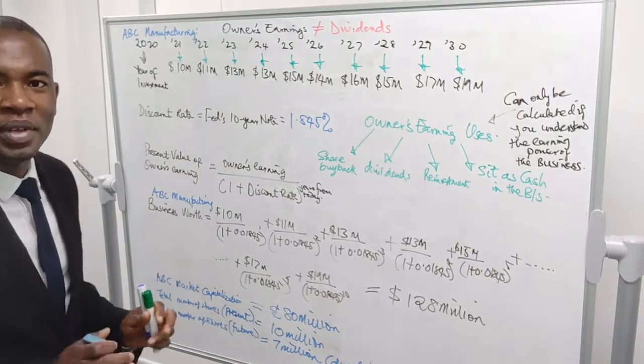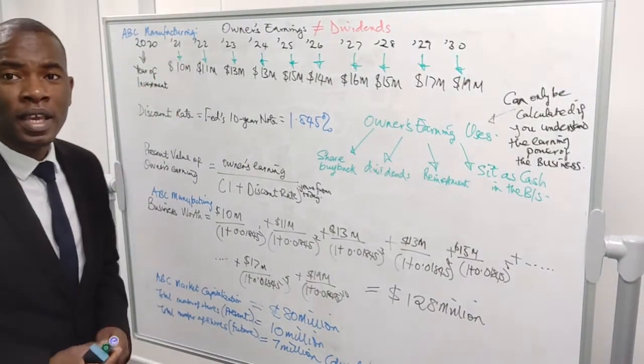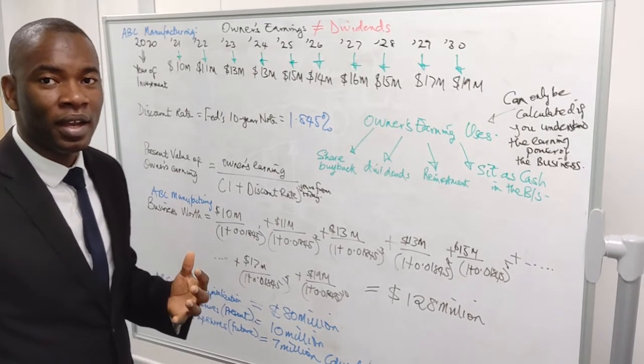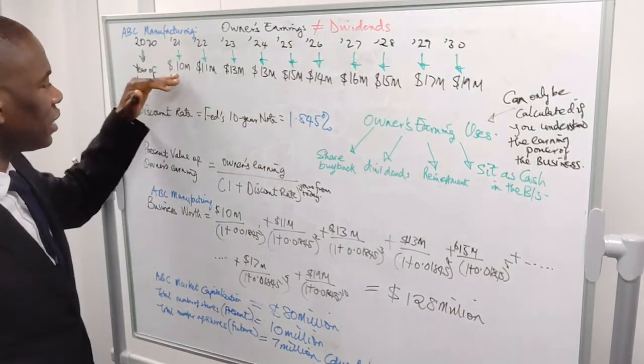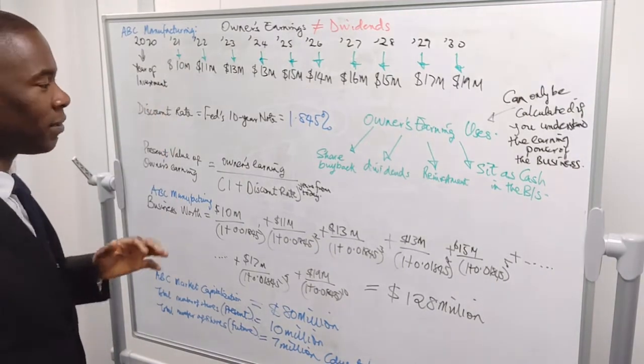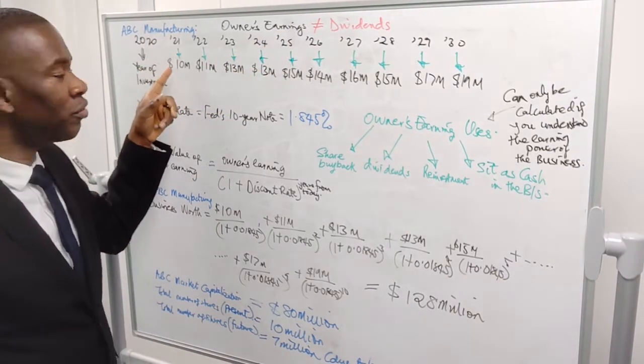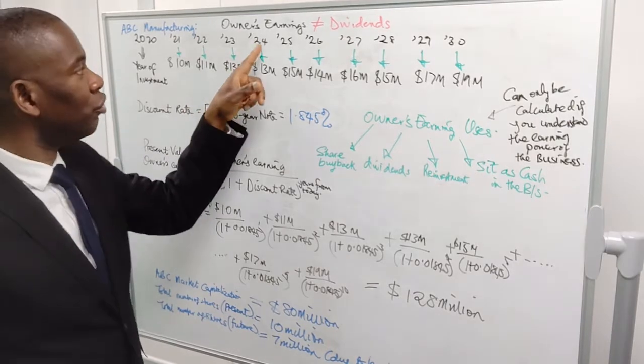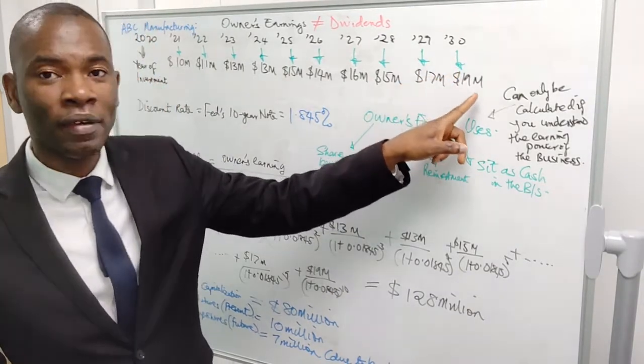Let's say we have a business here that you call ABC Manufacturing. This ABC Manufacturing, we have done our due diligence. When I mean due diligence, we have understood the earning power. And then we are able to compute the owner's earning for the future. And it comes to this. For instance, this is year 2020, the current year, which is the year we are going to make our investment. After that, we have the owner's earning as in year 2021, $10 million, 2022, $11 million, 2023, $13 million, 2024, $13 million, 2025, $15 million, and so on to 2030, and we have $19 million.